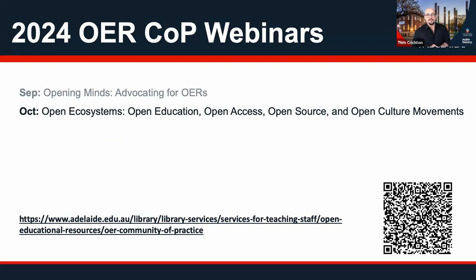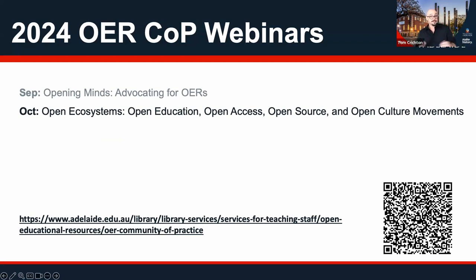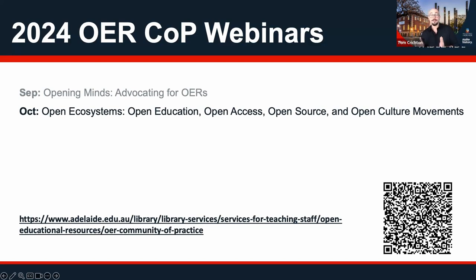In October, we'll be looking at how Open Education fits with broader open movements — open access resource publishing, open source software, open culture movements. For decades there's been a whole range of open movements advocating for the open creation and distribution of knowledge and information. During October is also Open Access Week, which is particularly focused on open access research publishing but also Open Education Resources. So that's a good month to look at the intersections there.